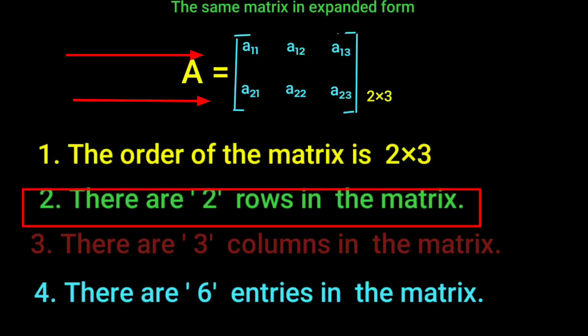The row number is the horizontal lines of entries, the row number.